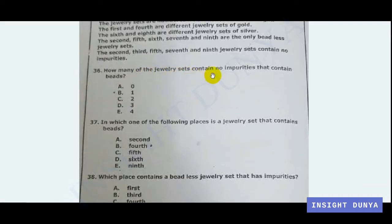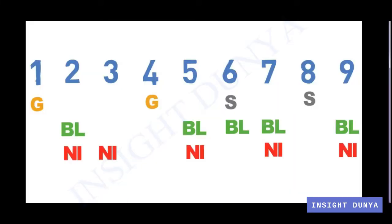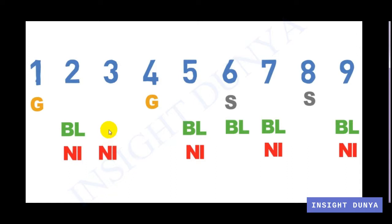Question 36: How many jewelry sets contain no impurities but also contain beads? We need to find sets that have beads but no impurities. Set two has no impurity but is beadless. Set three has beads and no impurity. Sets five, seven, and nine are also no-impurity sets but they are beadless. So only set three has no impurity and has beads.